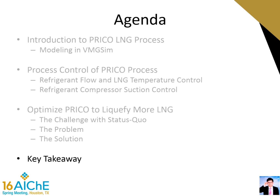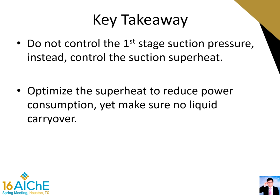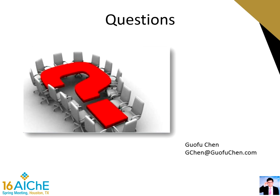We now come to the final conclusion. For a typical pre-co LNG process, please do not control the first-stage suction pressure. Instead, control the suction superheat by manipulating the pressure throttling valve. There may be room to further optimize your pre-co LNG plant by optimizing the superheat, but please make sure there will be no liquid carryover to the compressor. I'm sorry for not being able to take your questions or comments in person. Please email me at jichan@guofuchan.com. Thanks for your attention.